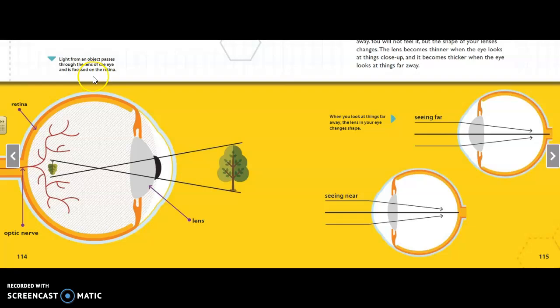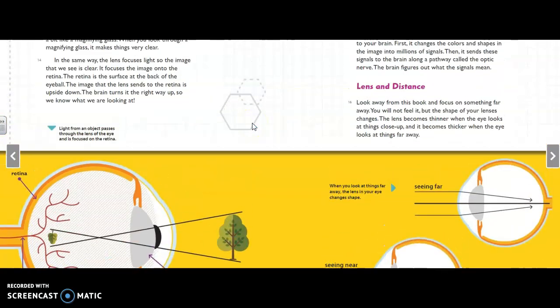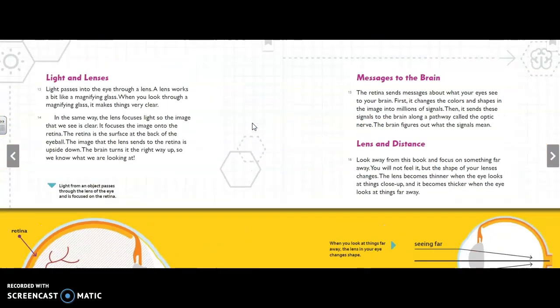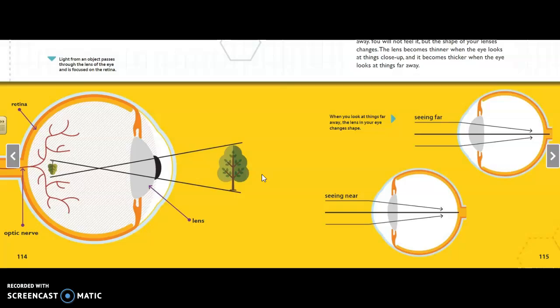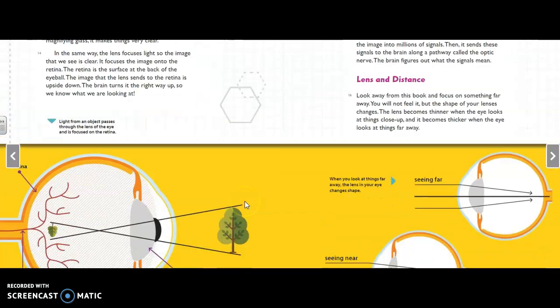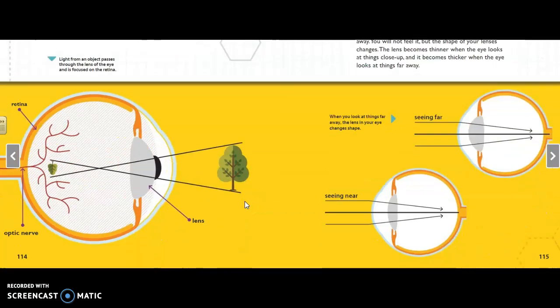And the caption up here, light from an object passes through the lens of the eye and is focused on the retina. So, how does the diagram shown here connect to the text and captions? What does this have to do with what we were just reading? I want you to think about it. And it shows us exactly what all of this was talking about. It shows us what that looks like in the eye.